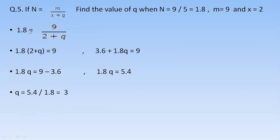So 1.8 multiplied by 2 is 3.6, and 1.8 multiplied by q is 1.8q is equal to 9. In order to calculate the value of q, you will take 3.6 to the right side. So 9 minus 3.6 it will become 5.4.